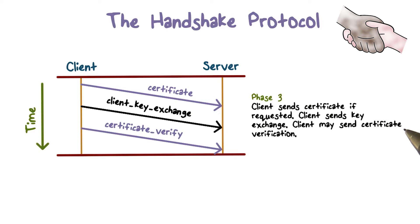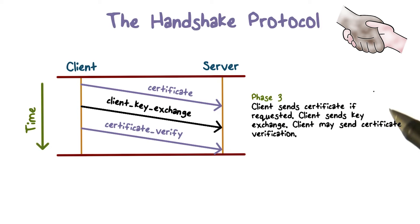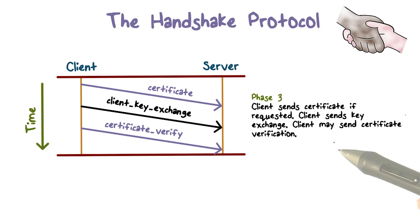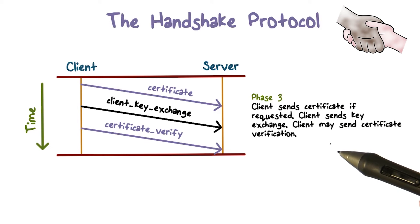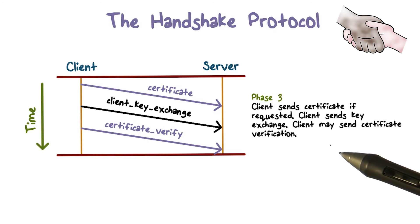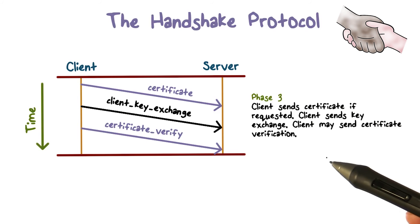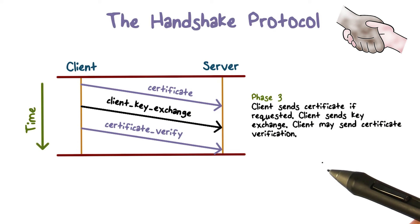Depending on the application requirements, the client may send its certificate to the server in order to authenticate the client to the server. Usually, if a website is public facing, then the authentication is typically one way — that is, the client needs to authenticate the server, but the server does not require the client to authenticate itself. On the other hand, for internal or private web servers, mutual authentication may be required.